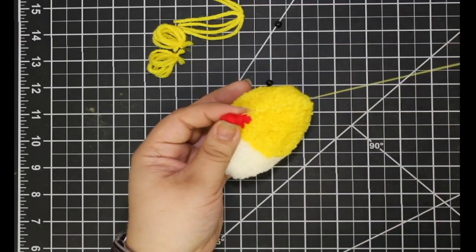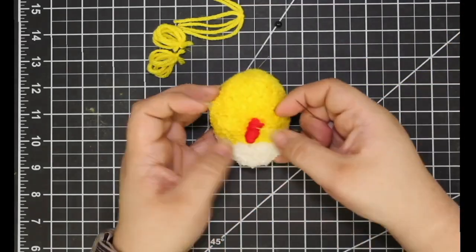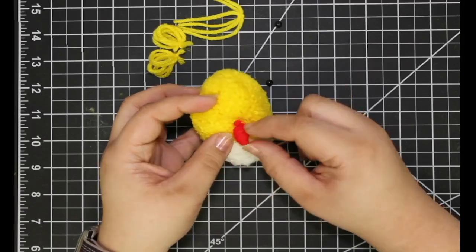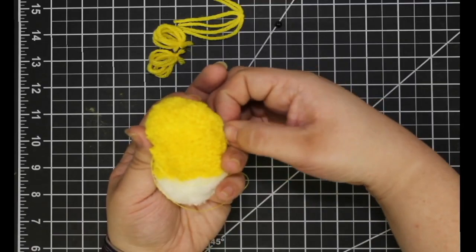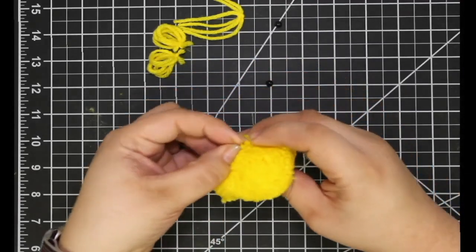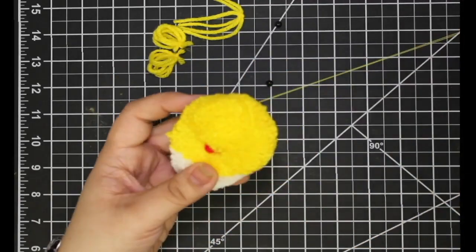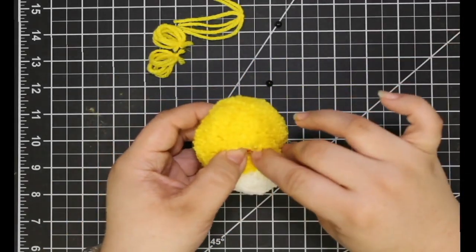Thread the needle through the base of the beak and pull the thread until the beak is situated back to where it started. Now push the needle through the bottom of the beak and through the back again. Pull the thread slightly to tighten the nose into position.